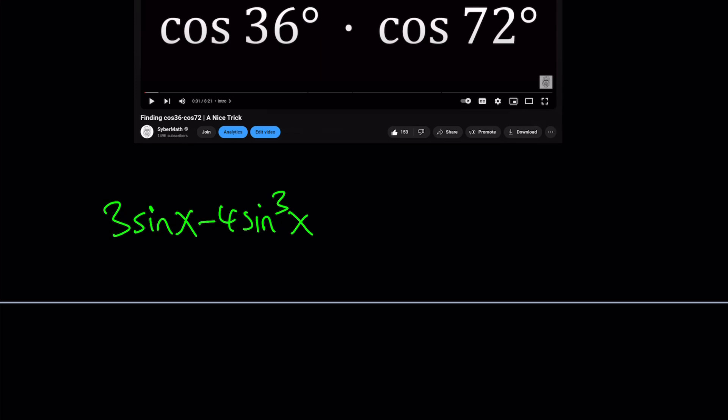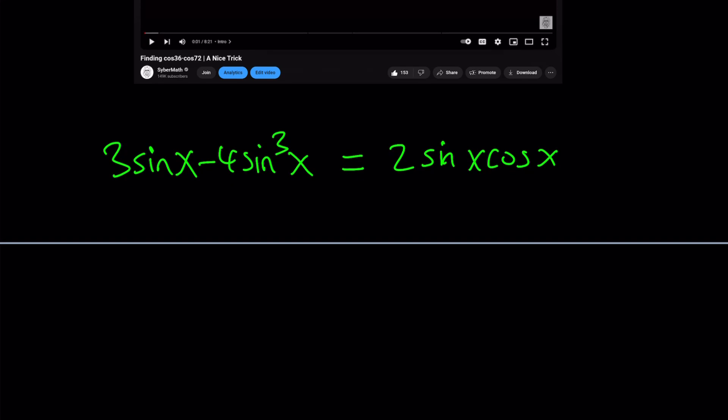Every term has sine in it, so let's factor out a sine. We get sine times (3 minus 4 sin squared x) equals 2 sin x times cosine x.